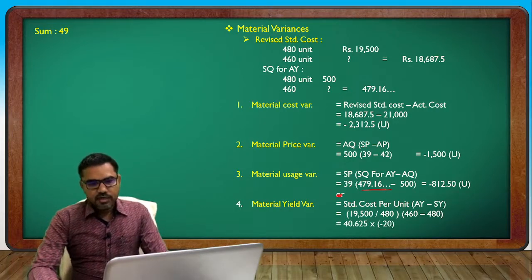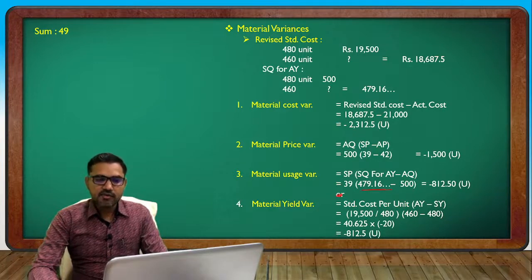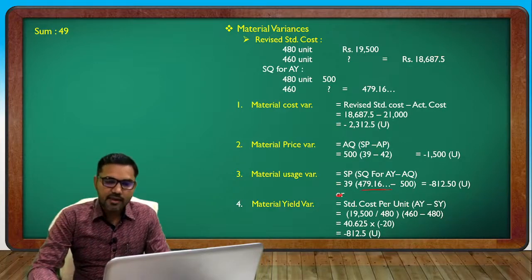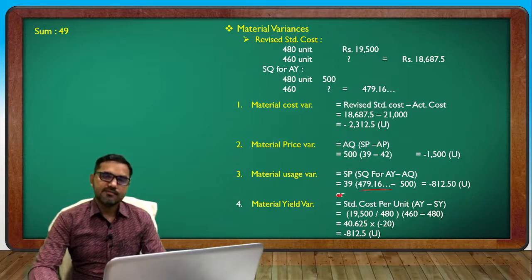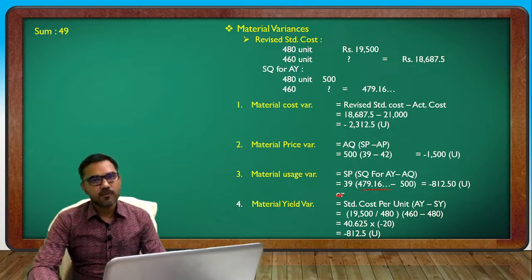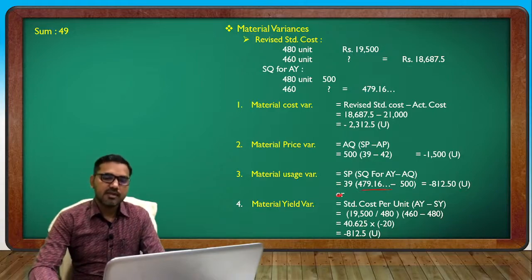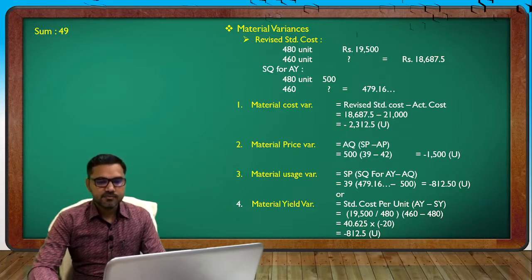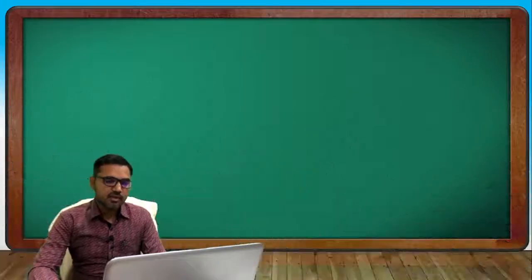40.625 multiplied by negative 20 gives answer negative 812.5. Material yield variance answer confirmed. Mix to 6 material uses yield answer.